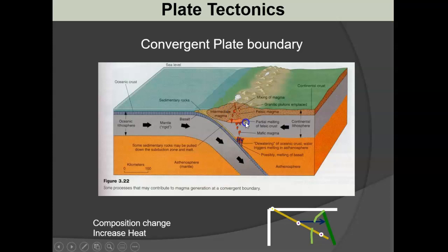The magma can also pool at the base of the continental crust, adding heat there and partially melting it. But the key driver is this change in composition initiated by subduction - introducing water-bearing fluids into the rocks at depth changes their properties, causing them to melt. Subduction is the mechanism that allows melting to start, and that's what enables volcano formation.